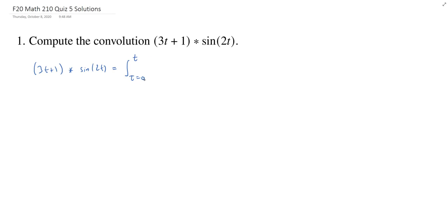This will make sure we end up with a function of t. We need to essentially reverse and shift this function 3t plus 1. Here's the big idea: we're going to evaluate this function, 3t plus 1, at t minus tau. So everywhere we see a t, we need to replace the t with t minus tau. Then we can add 1. We'll remember some parentheses, so we know it's the whole thing getting multiplied by. And now we evaluate sine of 2t at tau. So everywhere we see a t, we have to put a tau, and then we multiply by d tau.